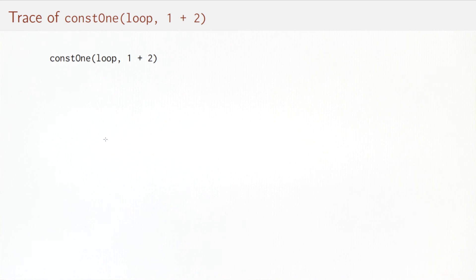The second expression, we would have constOne of loop and one plus two. Well, here we have to reduce the first argument because it's called by value and we get into the same situation that loop reduces to itself. So no progress and we get another infinite cycle.